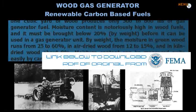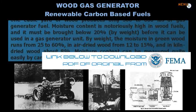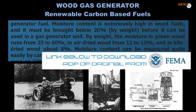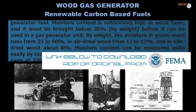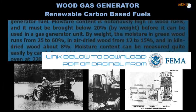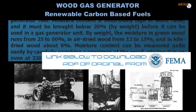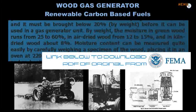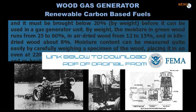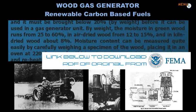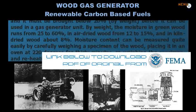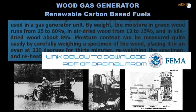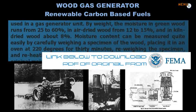By weight, the moisture in green wood runs from 25 to 60%, in air-dried wood from 12 to 15%, and in kiln-dried wood about 8%.